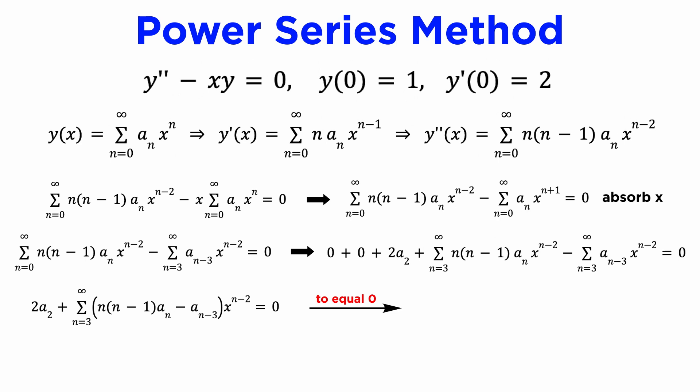In order for this expression to be zero, both the pulled out terms at the start and every term under the summation must all be zero. So we can find that the term a_2 equals zero, and we also get a recurrence relation. n times (n minus 1) times a_n minus a_(n-3) equals zero. This is a relationship between the terms of our series solution, and we can solve for a_n to get a_n equals a_(n-3) over n times (n minus 1).